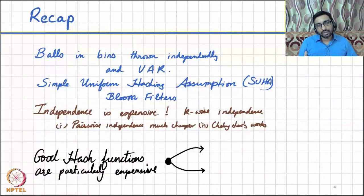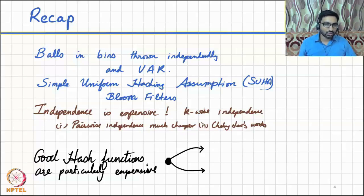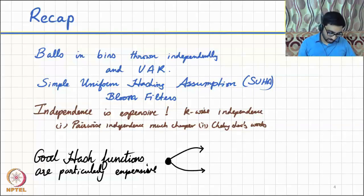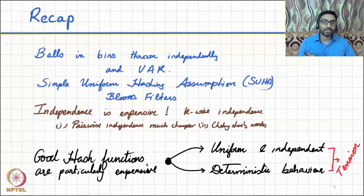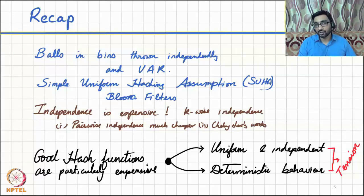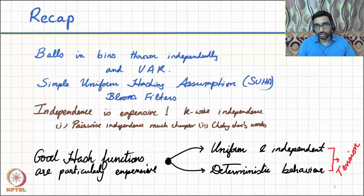We have also observed that hash functions can be expensive, difficult to analyze, and hard to implement. The problem comes from the fact that hash functions have to balance two requirements. On the one hand, hash functions should behave randomly — they should have good randomness properties. For example, when you hash an item, it must be equally likely to be hashed into any one of the locations, and we would like these hashed values to be mutually independent of each other.